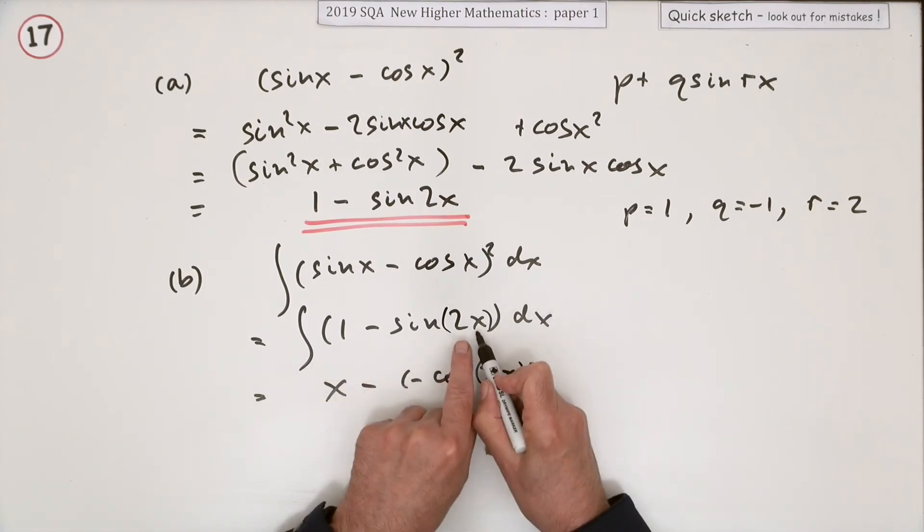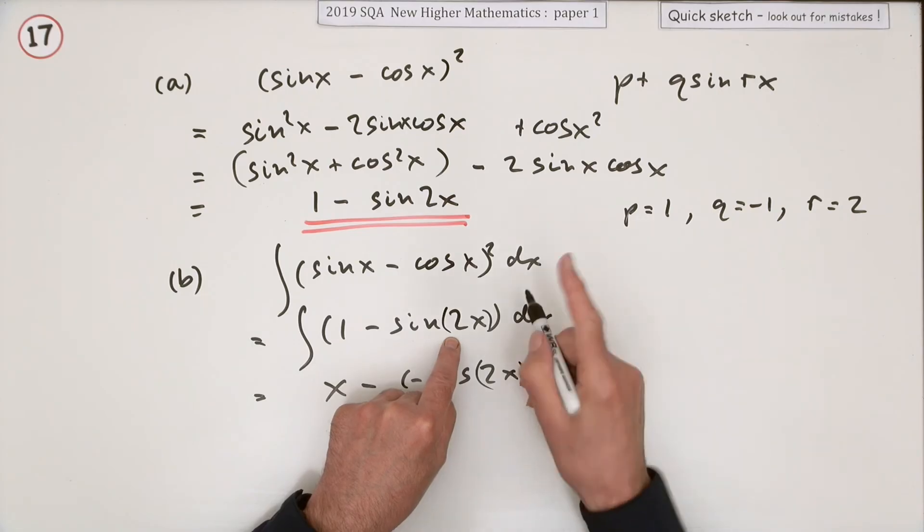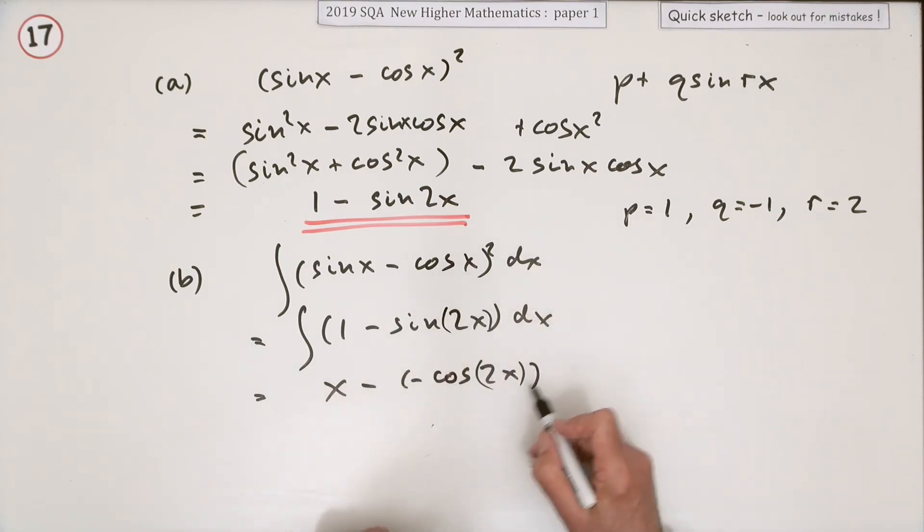But divided by the interior, because this is a valid function of a function - it's a function of a linear function. Divide by the interior derivative, which is just a number. That's the important thing - it has to be just a number. It's just 2, so all over 2. It looks a bit messy, and don't forget plus c.